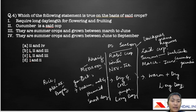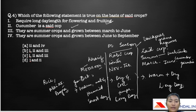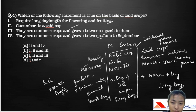Let's move on to the question again. Which of the following statements is true on the basis of Zaid crops? Statement one — they require long day length for flowering and fruiting — is true. Statement two — cucumber is a Zaid crop — is also true. Statement three — they are summer crops grown between March and June — is absolutely correct. Statement four — summer crops grown between June to September — is wrong. So the correct answer is option B, which says one, two, and three.